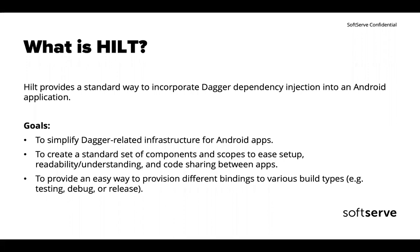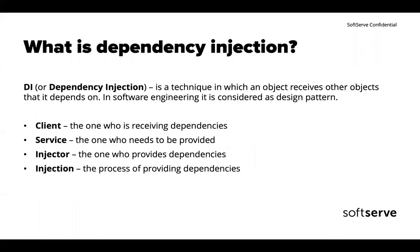For those who don't know what Dagger or dependency injection is, let's deep dive into some basics. Dependency injection is a technique - not exactly a pattern - when some object receives other objects that it depends on. In software it's generally considered a design pattern; it's not part of the Gang of Four patterns but is an extension to them. There are four main entities in dependency injection.